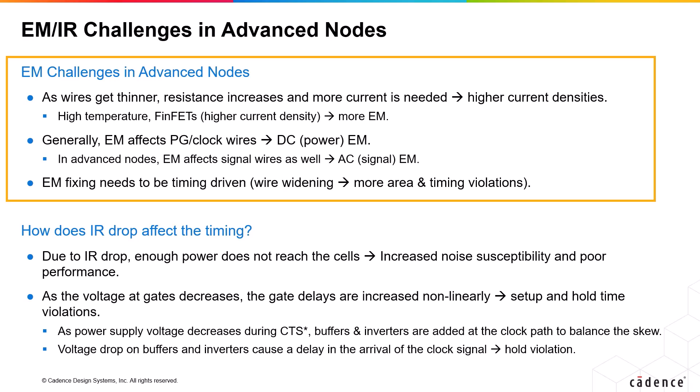Either of these can cause system failure, and that is often very hard to diagnose. In case of voids, the wires get thinner, the resistance increases, which demands more current, and that in turn results in higher current densities. Advanced devices like FinFETs have got more current density than planar transistors, and that makes EM issues worse. EM is also directly proportional to temperature gradients. In advanced nodes, EM is not just limited to power, ground, or critical clock wires — it also impacts signal wires, known as DC power EM or AC signal EM.